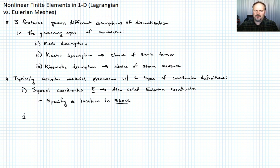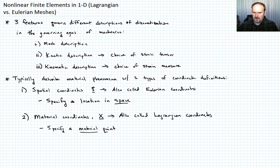The second type of coordinates we're going to deal with are what are called material coordinates. We'll denote those with a capital X. They're also called Lagrangian coordinates. And what these do is they specify a material point. So it basically acts as a label for the material.